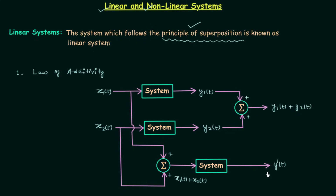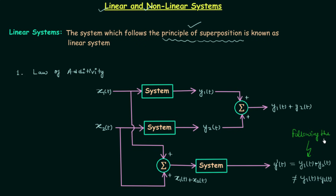Now there are two possibilities. The first possibility is that the output y̅(t) is the same as y1(t) + y2(t), and the second possibility is that y̅(t) is not the same as y1(t) + y2(t). In the first possibility, when the two results are the same, we say the system is following the law of additivity. In the second case, when the two results are not the same, it is not following the law of additivity.